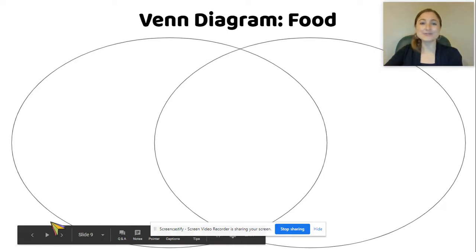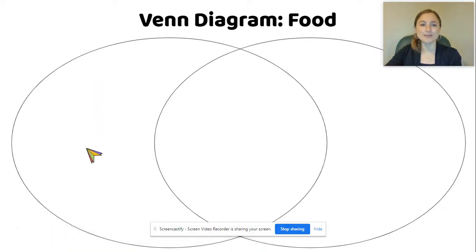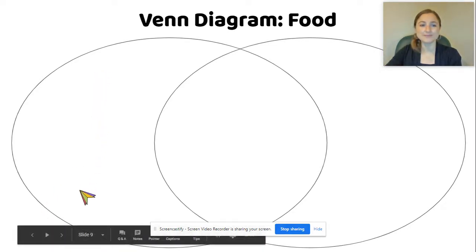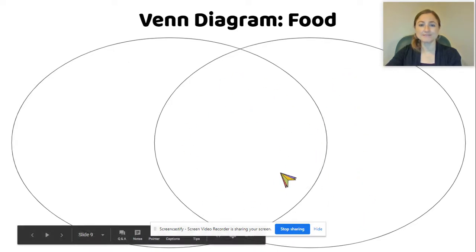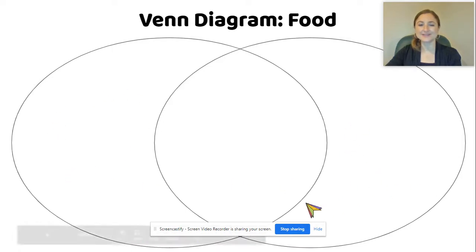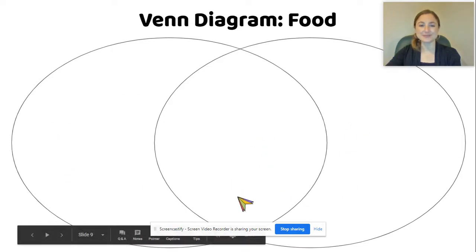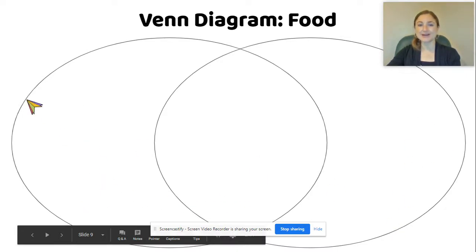We're going to use the Venn diagram to show how one thing and another thing are the same and different. We're going to use the middle to talk about how the things are the same, and the outside to talk about how the things are different.